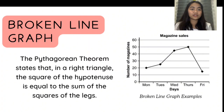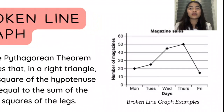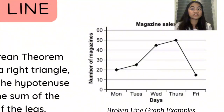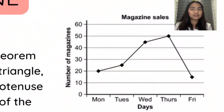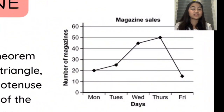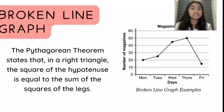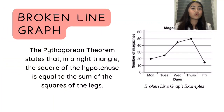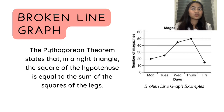A broken line graph is a diagram that has a horizontal axis divided into units of time and a vertical axis that displays the values of the qualitative characteristics studied, in which the data recorded are represented by points that are then connected to one another by segments to form a broken line that illustrates the evolution of the phenomenon under consideration.